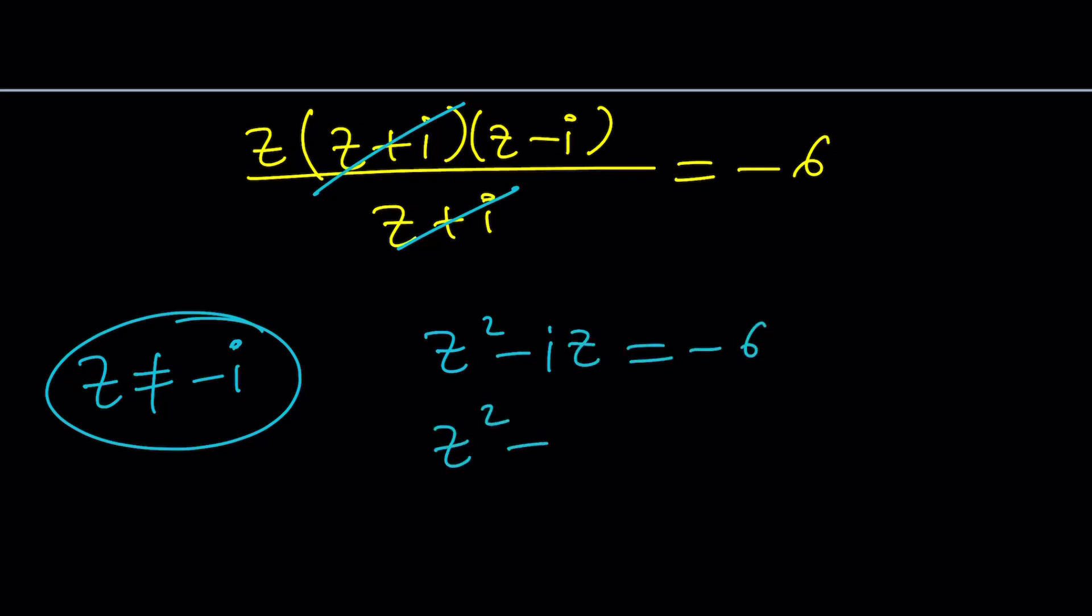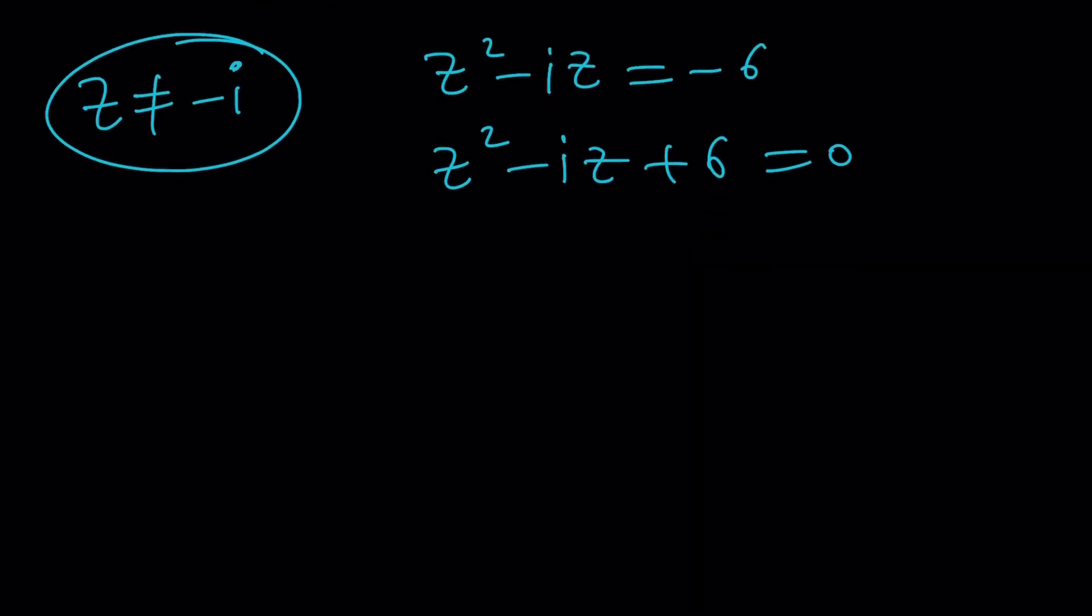And then we can put everything together. Since this is quadratic, you don't need any tricks or substitution. Just use the quadratic formula. Keep it simple. Negative B plus minus the square root of B squared, which is I squared, minus 4 times A times C, which is minus 24, all over 2.